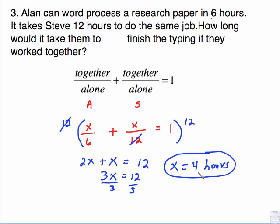And you can check this. This little scenario works. Put this 4 in for the x. You're looking at 4 over 6 plus 4 over 12. Does that really equal 1? And the answer is yes, because 4 over 6 reduces to 2 thirds, 4 over 12 reduces to 1 third, which does equal 1. So it does check.